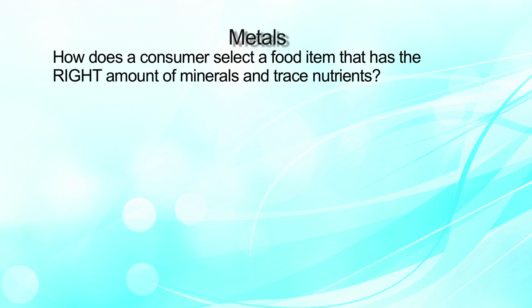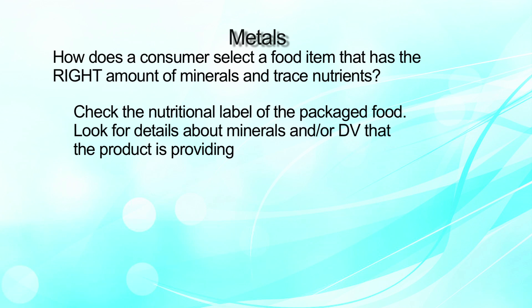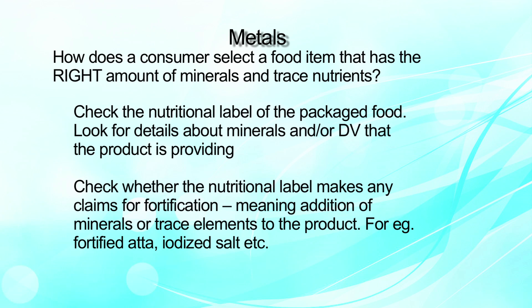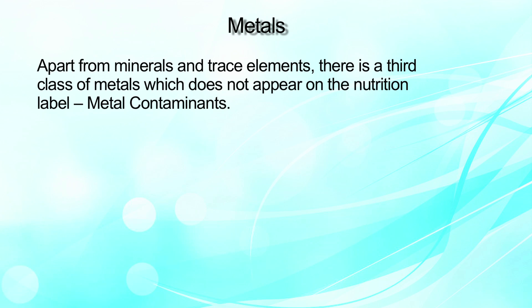How does a consumer select a food item that has the right amount of minerals and trace nutrients? We can check the nutritional label of packaged food and look for details about minerals and daily values that the product is providing. Also check whether the nutritional label makes any claims for fortification — meaning addition of minerals or trace elements to the product, for example fortified atta or iodized salt. Apart from minerals and trace elements, there is a third class of metals which does not appear on the nutritional label, and that is metal contaminants.